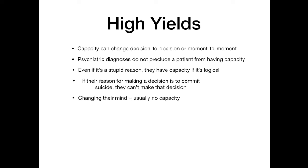If the reason for making a decision is to commit suicide, they cannot make that decision. If somebody wants to leave the hospital AMA and you ask them why, and they tell you they just want to go home and die, they can't make that decision — at that point you're going to have to involuntarily commit them to inpatient psychiatry. If the reason for their decision is that they're trying to die or kill themselves, that does not satisfy capacity and would trigger psychiatric admission. Finally, changing their mind is usually a red flag that they don't have capacity. If a patient makes a decision and then immediately goes back and forth — 'nevermind, let's do it, no I don't want to do it' — that is a huge red flag that they don't have capacity.